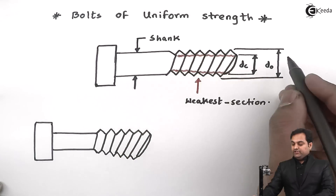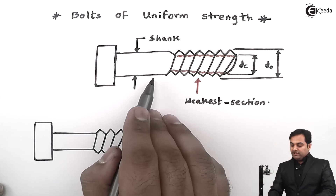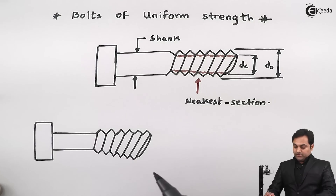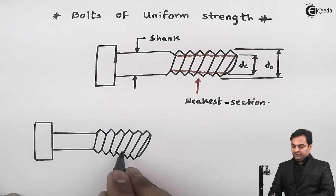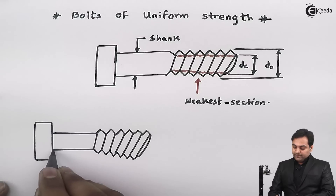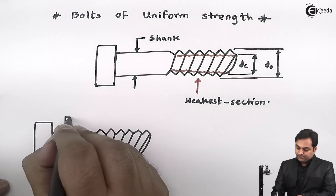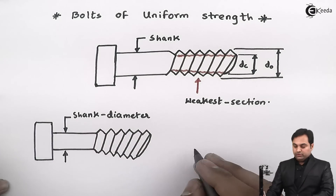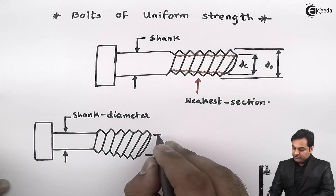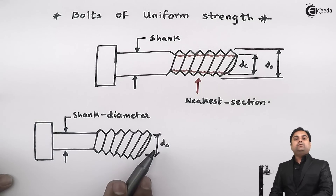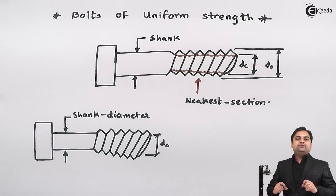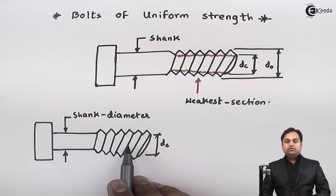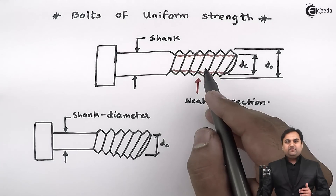Previously the shank diameter was equal to the outer diameter. Now what we are doing is removing material at the shank and making the shank diameter equal to the core diameter, Dc, the smaller diameter — as seen in this diagram. When the load acts, it will not concentrate only in the threaded portion but will be uniform, because the shank diameter equals the core diameter. This bolt would be equally stressed in the shank and in the threaded portion, so the chances of failure are less.